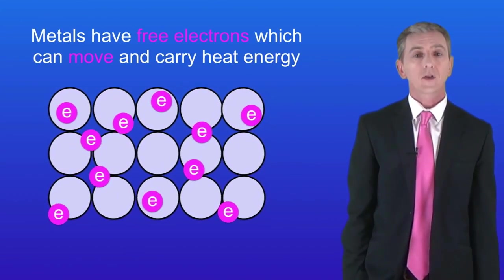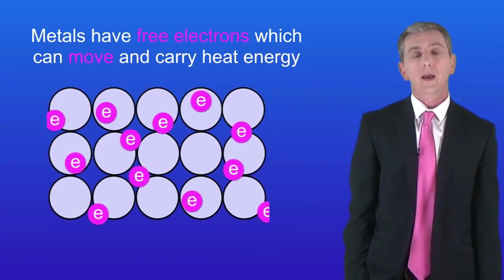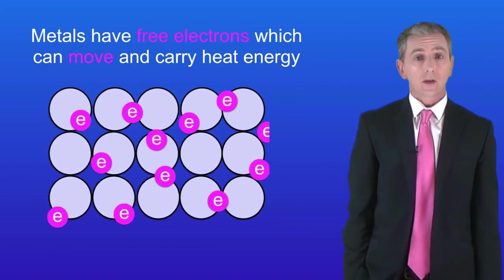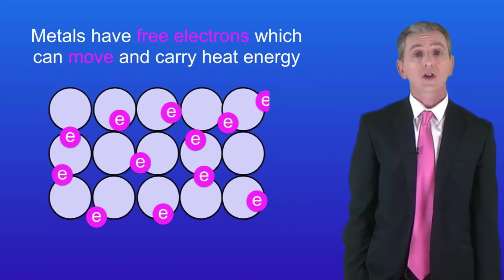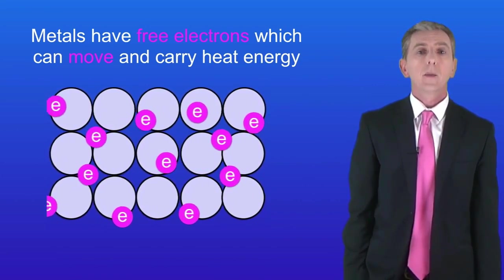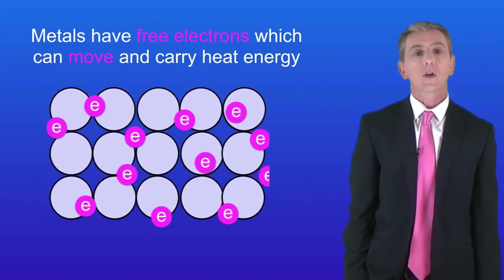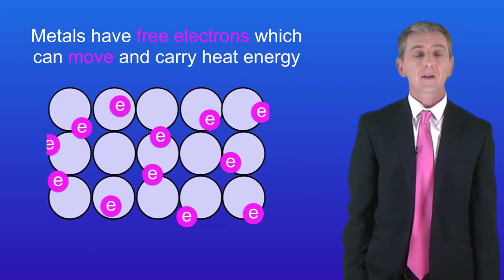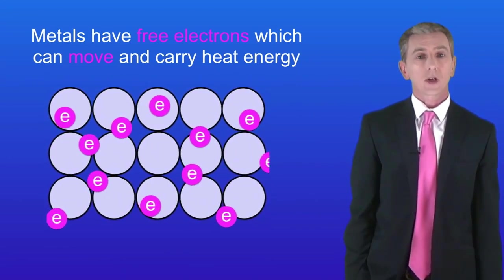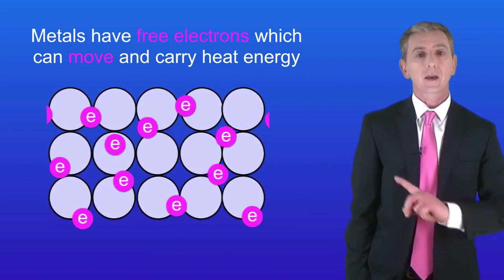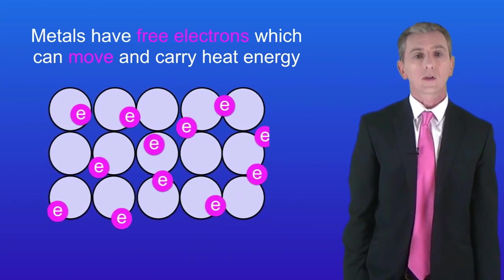Remember that heat moves by conduction through solids because the particles are very close together so vibrations can easily pass between them. Metals are really good conductors of heat. Metals are solids so the particles are packed close together and vibrations can easily spread between them. But metals have another special property: they have got free electrons. These free electrons can move and carry energy, and that makes metals really great conductors of heat.